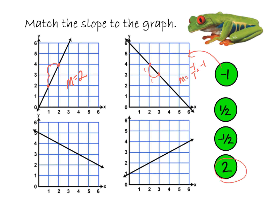Going down to the lower left, I see two good points. This one went down one to the right two. Because it went down, it's going to be negative one over two, or negative one-half. The last one on the lower right, I see two good points. It went up one over two, so my slope there is one-half.